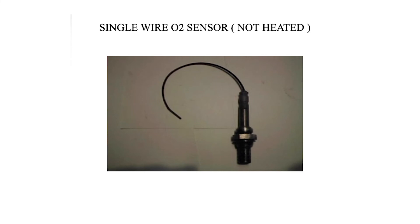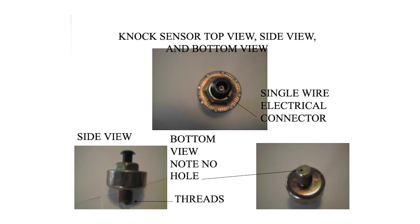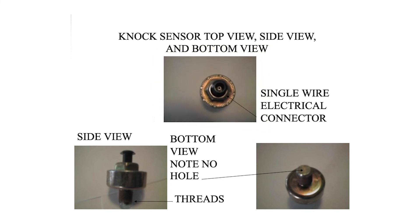Knock sensor purpose: sends a signal to the computer when the engine knocks, and the ECM retards timing until knocking stops. Usually mounted on the side of the engine block. Top view, side view, and bottom view of the knock sensor are shown.